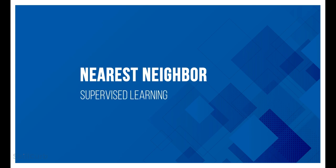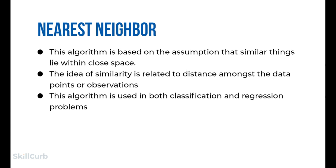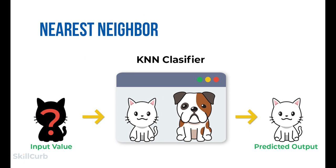The K-Nearest Neighbors (KNN) algorithm is a simple, easy-to-implement supervised machine learning algorithm that can be used to solve both classification and regression problems. KNN uses feature similarity to predict the values of new data points — the new data point will be assigned a value based on how closely it matches the points in the training set. For example, to identify whether a creature looks like a cat or dog, our KNN model will find the similar features and put it in either the cat or dog category.